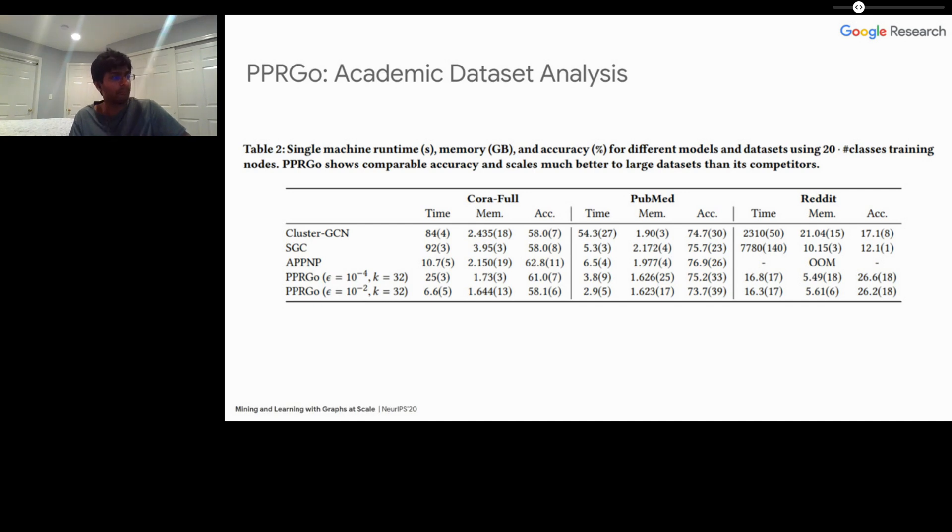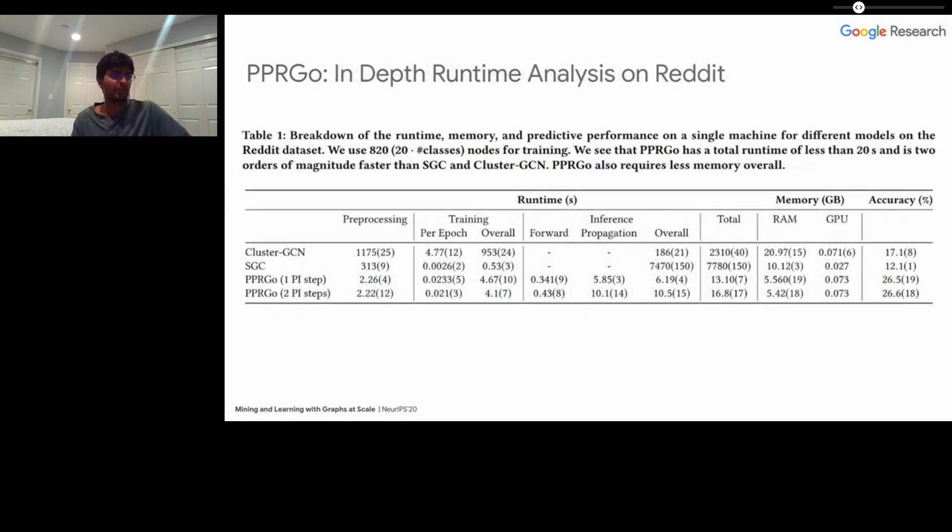Let's start with the academic data sets. This is a runtime analysis and accuracy analysis of running PPR Go and the baselines on a single machine using 20 times the number of node classes for training. So what that means is, Quora has seven different classes, so for Quora we are using 140 nodes for training. What's really impressive here is that PPR Go shows comparable accuracy and scales much better to large data sets than its competitors. On Quora and PubMed, everything is roughly about the same. The accuracy numbers and the speeds are all kind of comparable. But for Reddit, where you have an order of magnitude increase in size, suddenly PPR Go is the only method that still retains this really fast approach. It's two orders of magnitude faster than all of the baselines that we looked at, and there's no trade off in accuracy. Actually, in some cases, PPR Go looks like it did much better in accuracy than the opposing methods.